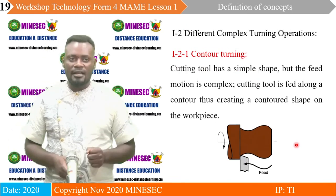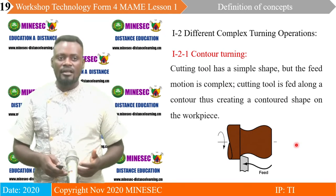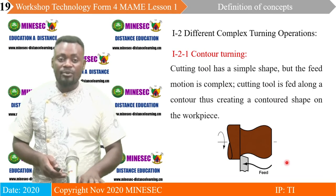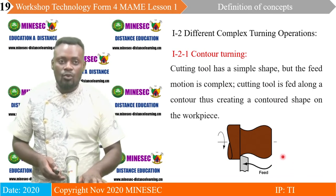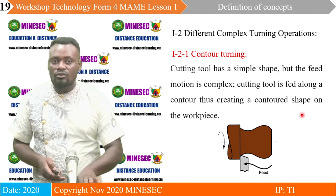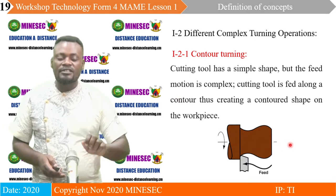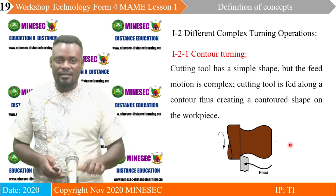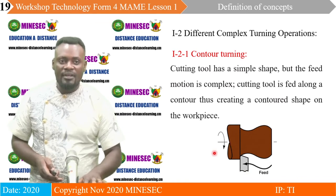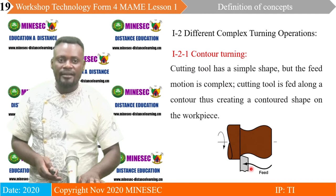We equally have contour turning. The cutting tool has a simple shape, but the feed motion is complex. The cutting tool is fed along a contour, thus creating a contour shape on the workpiece. It is similar to simple turning, but as long as the tool is moving along a contour, the feed motion here is complex. This image looks like the handle of an ordinary stamp used in offices — this is the form in which it is realized with the help of the tool. The workpiece is in motion while the tool comes with a speed well controlled by the machinist.